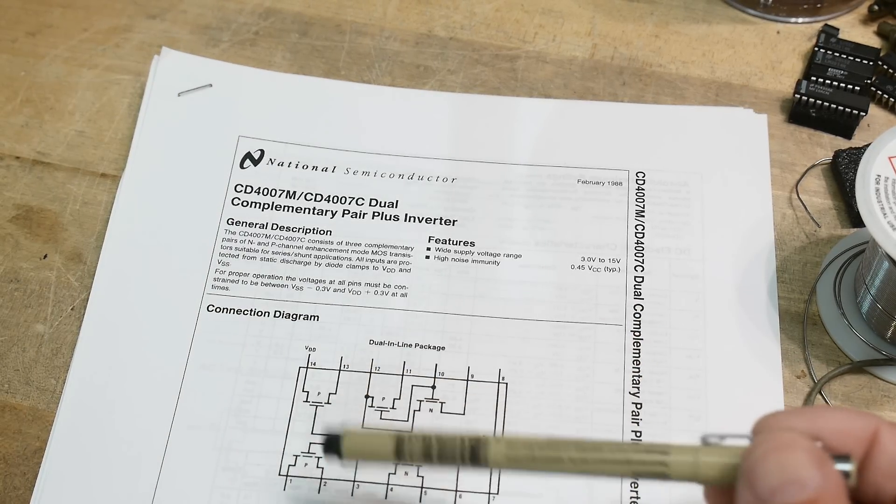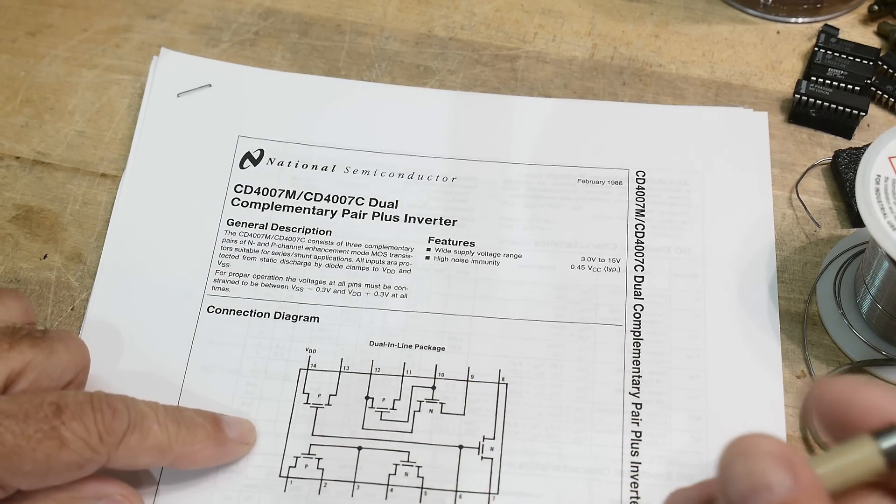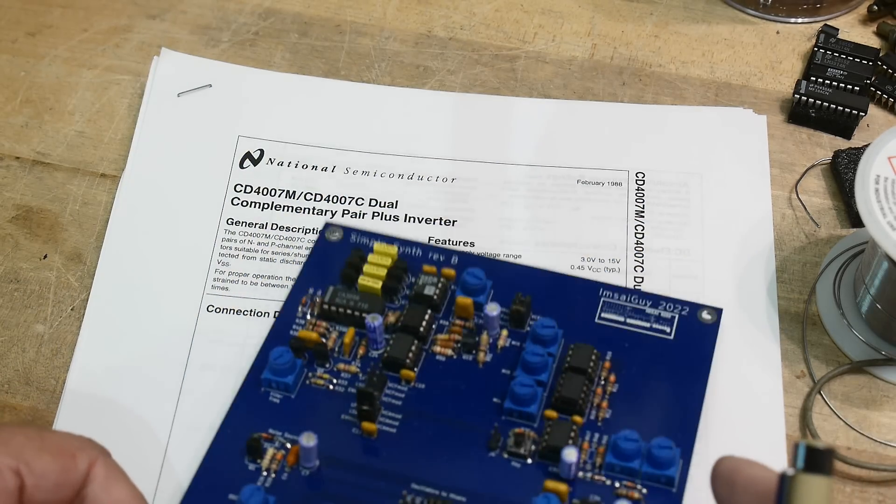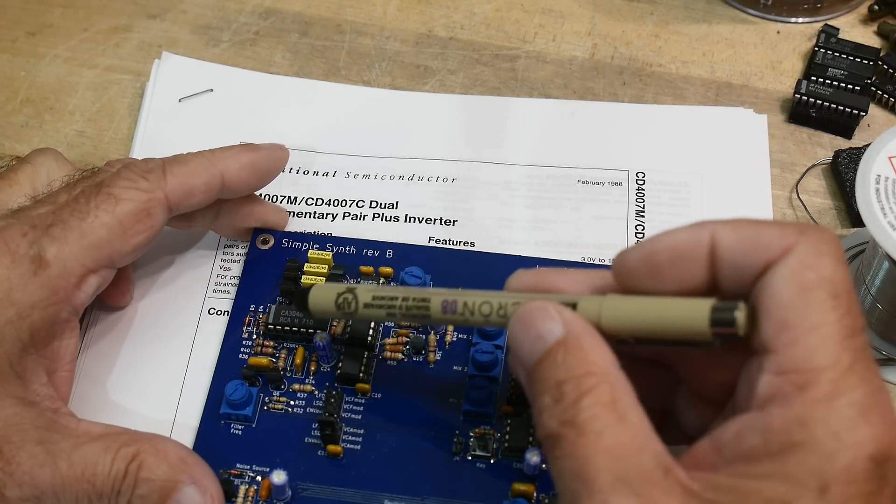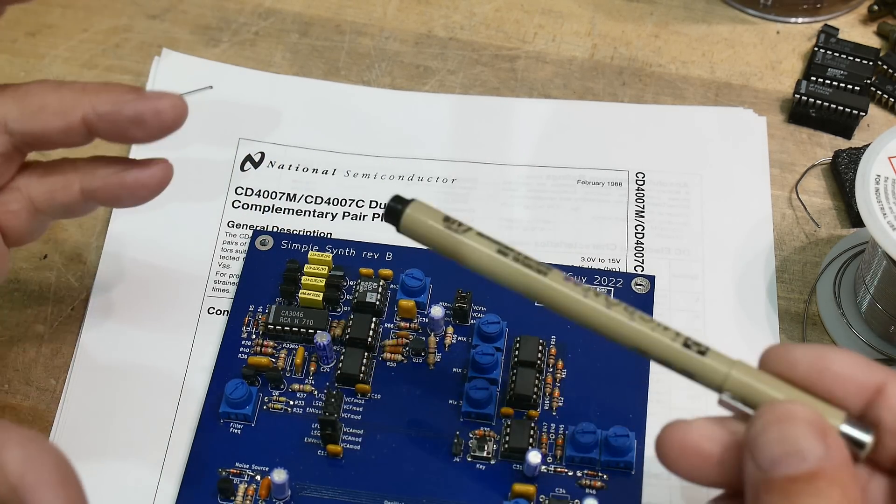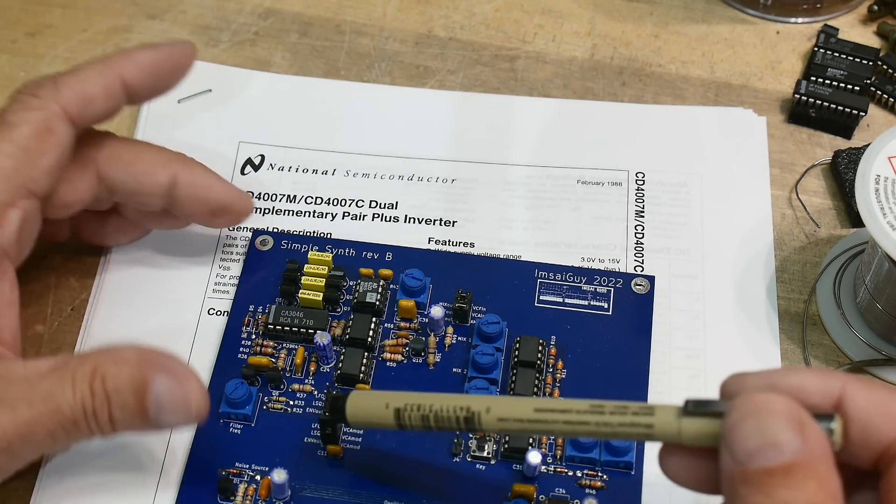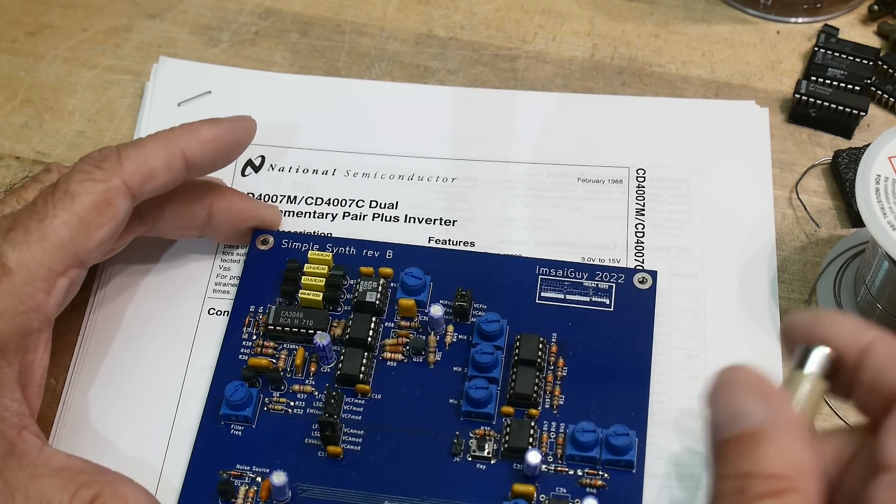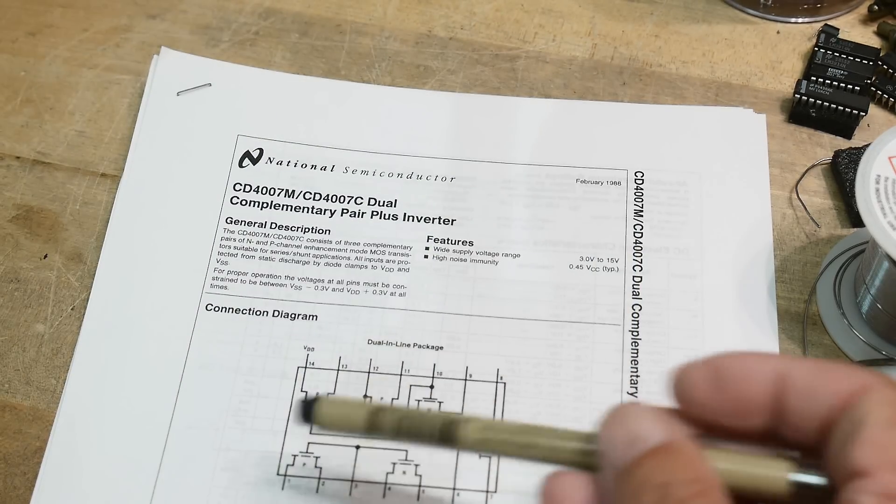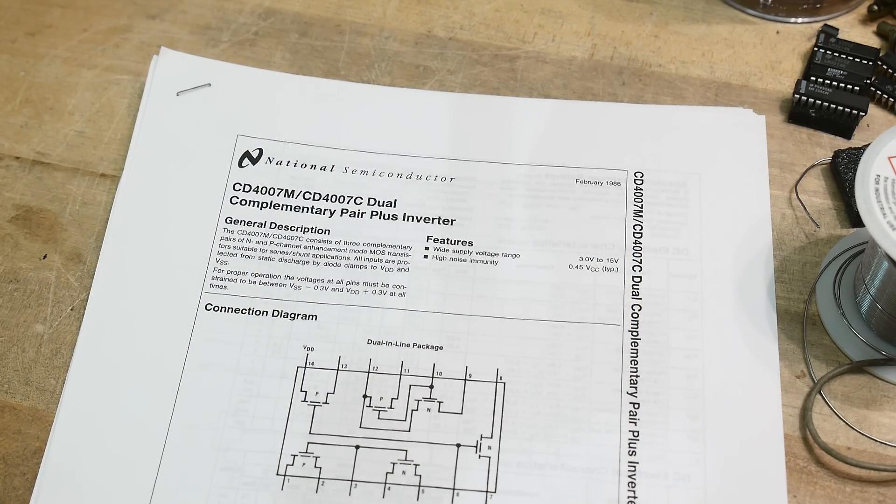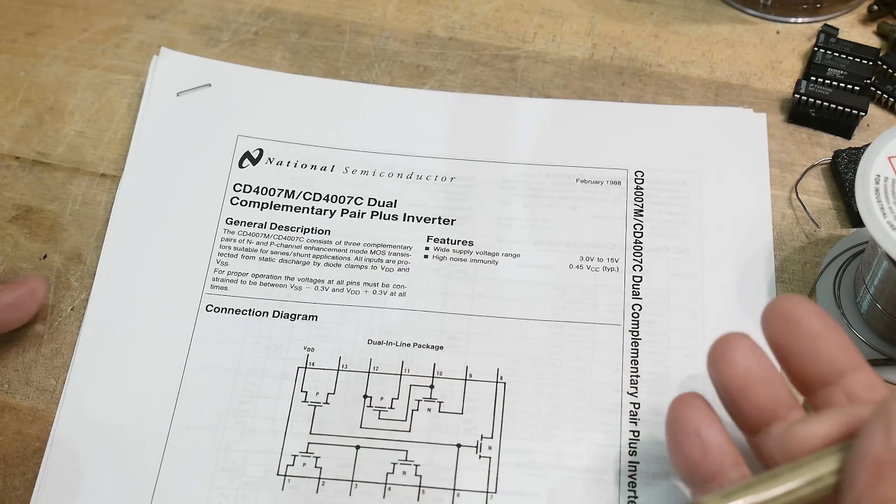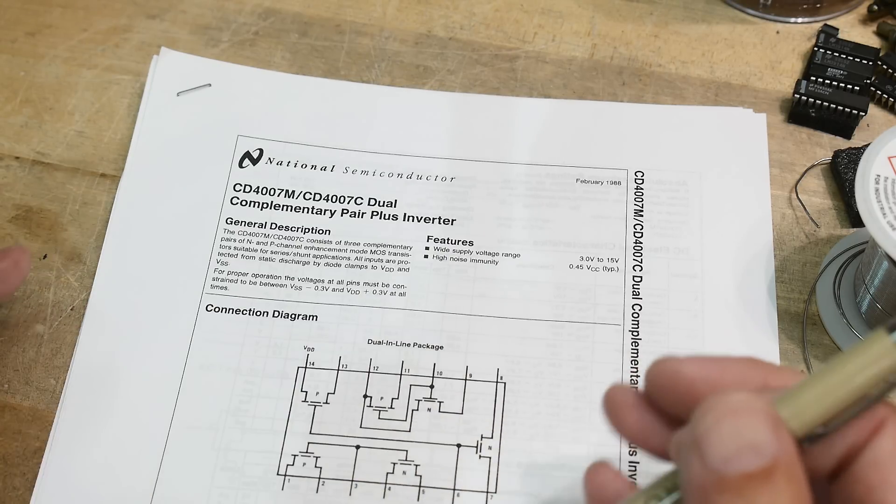I did a part that looks similar to this that was all NPN transistors, all bipolar transistors. I used it on my synthesizer board and it is a CA3046. So I used that as having matched transistors for the Moog filter. Now this is all matched FETs. They are complementary pairs and so they can be used in all sorts of different ways. But again, you have to be careful.